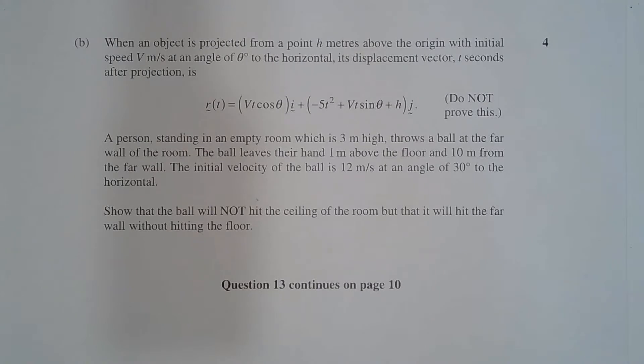Question 13b. When an object is projected from a point h meters above the origin with initial speed v meters per second at an angle of theta degrees to the horizontal, its displacement vector t seconds after projection is r(t) equals vt cos theta i plus negative 5t squared plus vt sine theta plus h j. Do not prove this.